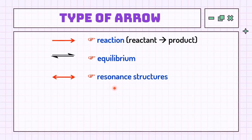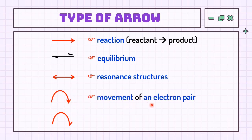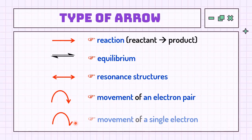A resonance structure means a single Lewis structure cannot fully describe the bonding. Lastly, we have curly arrows, used in mechanisms to show various electron pairs moving around. A full-headed curly arrow indicates the movement of an electron pair — that is, two electrons. A half-headed curly arrow indicates the movement of only one electron.